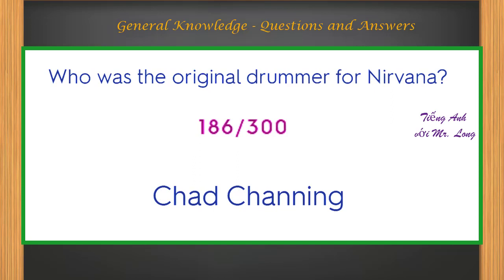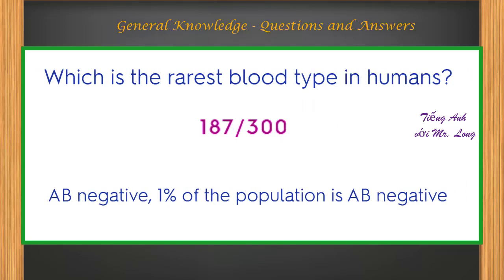Who was the original drummer for Nirvana? Chad Channing. Which is the rarest blood type in humans? AB negative. 1% of the population is AB negative.